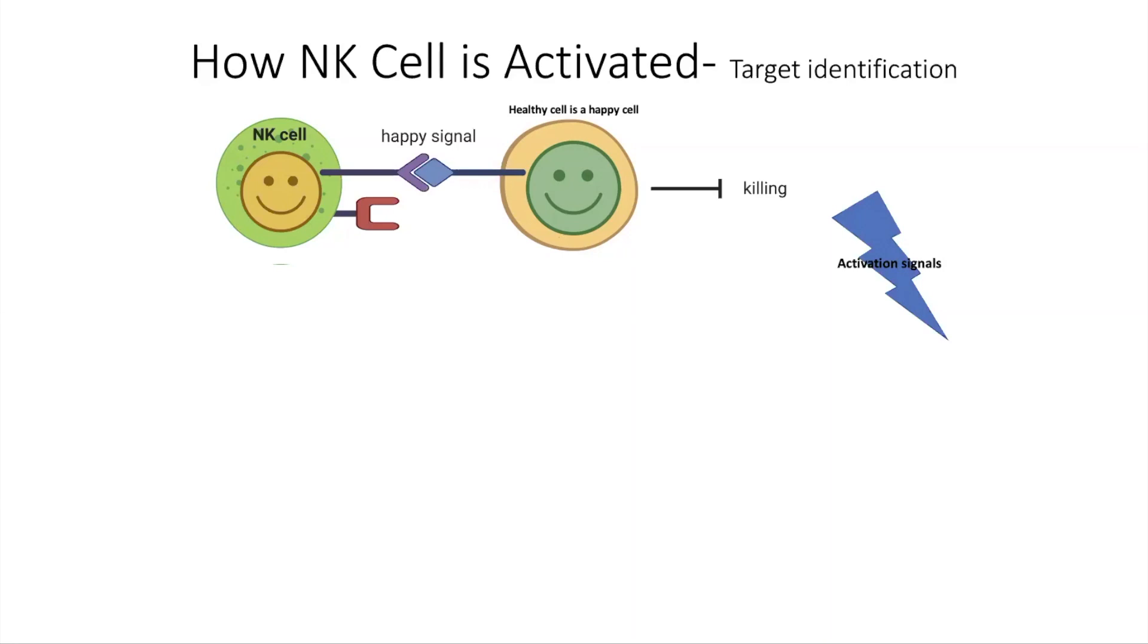But when the happy cell is infected or damaged, it sends sad signals that are received by other types of NK-cell receptors which activate the NK-cell and lead to killing that sad cell.